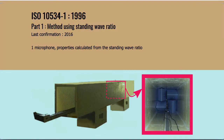The first part of ISO 10534 is about the standing wave ratio method. Here we have an impedance tube with the excitation panel removed so you can see the tube itself, which is a large one of 600 mm by 600 mm. We can see wedges for an anechoic chamber in blue, and a microphone in black which can be moved along a rail.